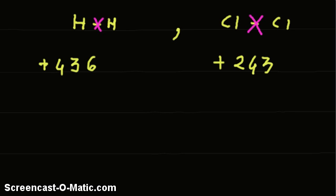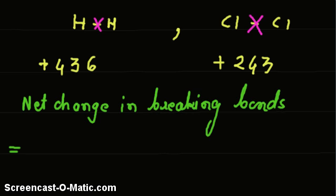So the net change in breaking of bonds is 436 plus 243, which equals to 679.